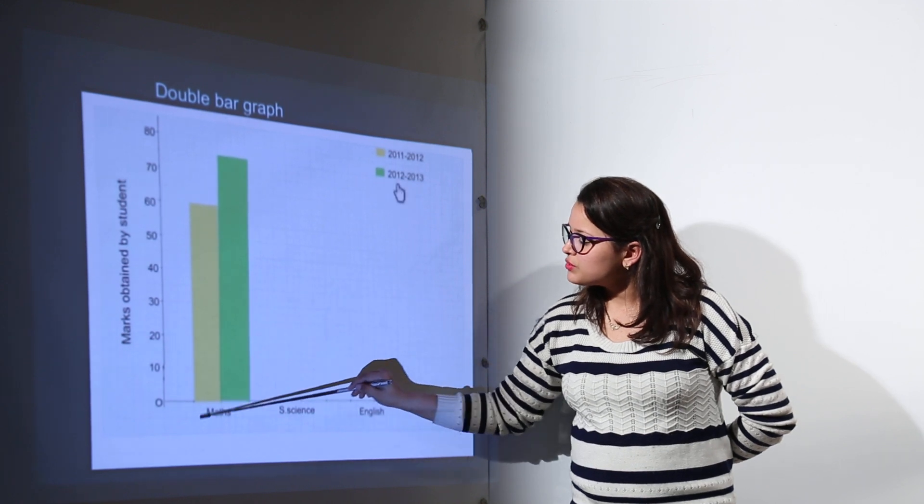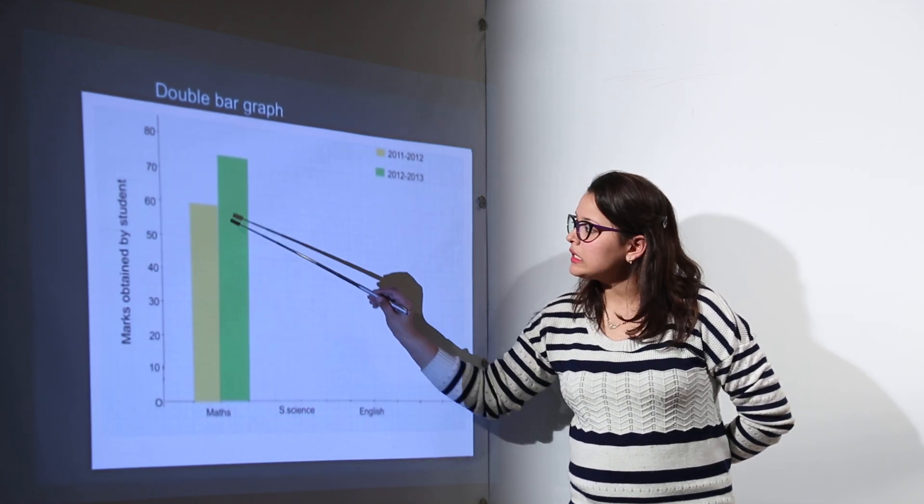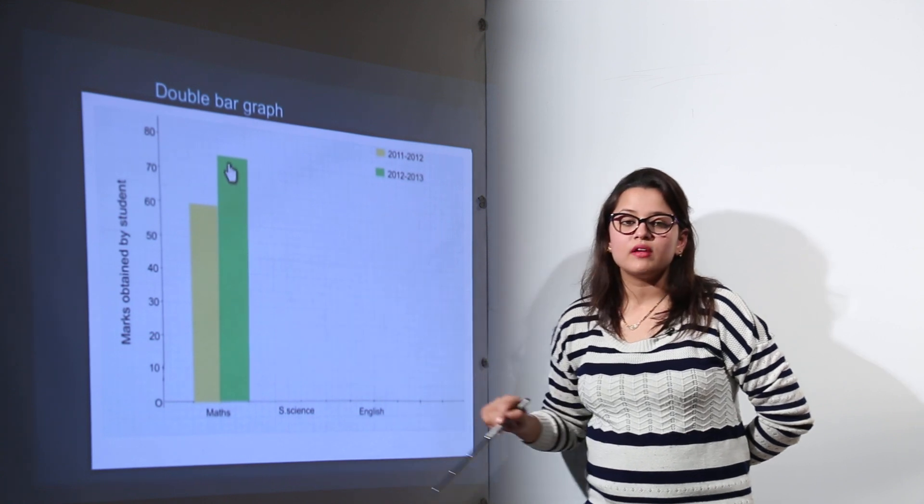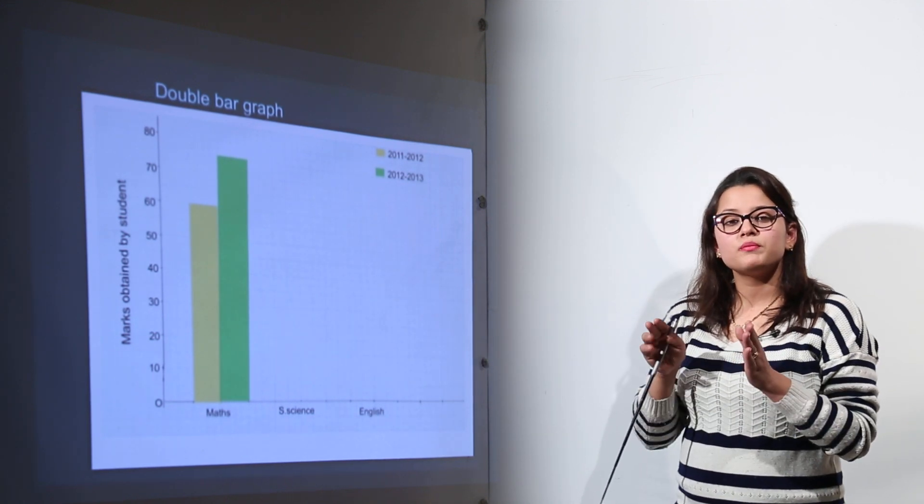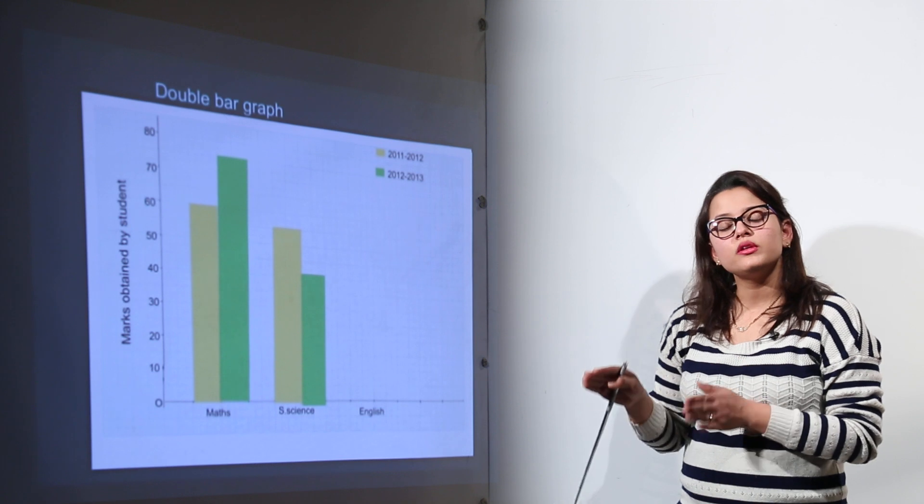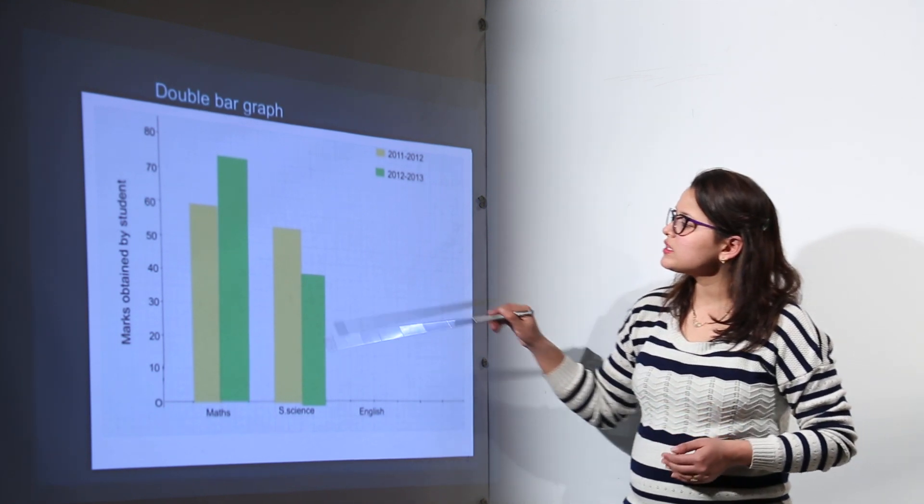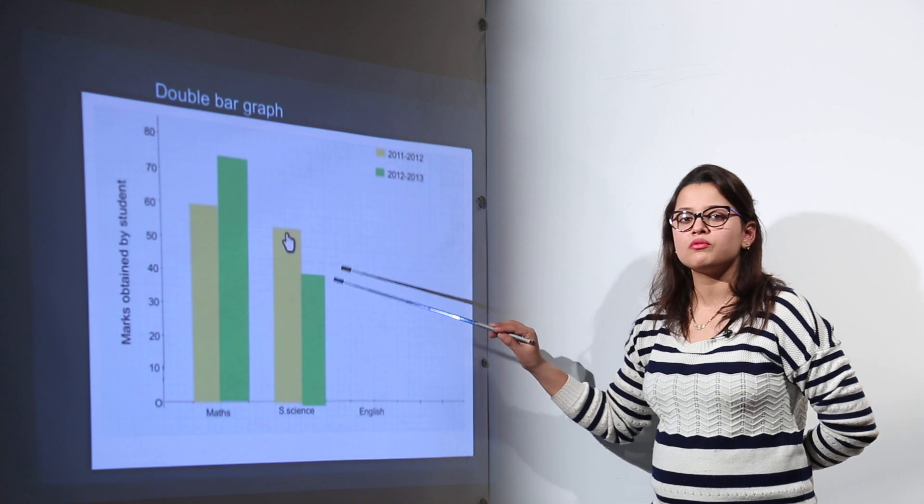Now you can see in both the comparisons, the student who secured marks in maths are 60% and 75% that means you can compare the performance of students in both the years. In one year the student has not performed that well but in the next year the student performed.